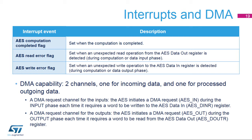Direct memory access requests are generated internally for both incoming and outgoing data. The DMA channel must be configured in memory-to-peripheral or peripheral-to-memory mode, with a data size equal to 32 bits.